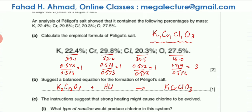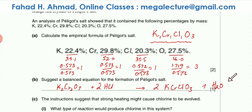To balance the equation: K is 2, so there should be 2 Péligot salt units, giving Cr = 2 as well, which is already balanced. Cl is 2, coming from the HCl side, so HCl coefficient is 2. There are 6 oxygens on the right side and 7 on the left side. There are 2 hydrogens and 1 oxygen missing, so a water molecule must be added to the right side to balance both hydrogens and oxygens.